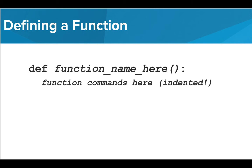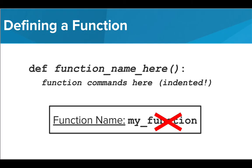Before you can use a function, you must define it. This includes giving it a name and telling Tracy what commands you want to perform when you call that function. To write a function definition, we start by using the term def and then typing the name of our function, followed by a pair of parentheses and a colon. All of the commands we want Tracy to perform when we call our function must be indented underneath the function definition. Don't forget our naming rules when deciding on a name for your functions.